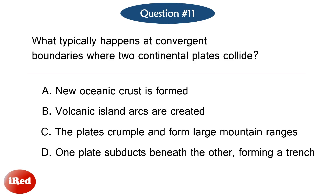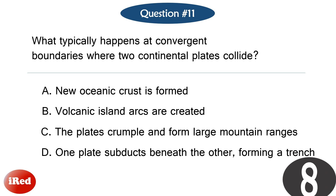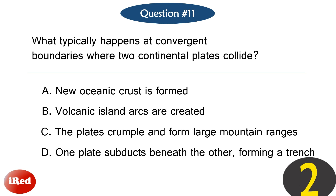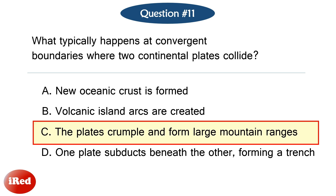Question number eleven. What typically happens at convergent boundaries where two continental plates collide? The correct answer is letter C: the plates crumple and form large mountain ranges.